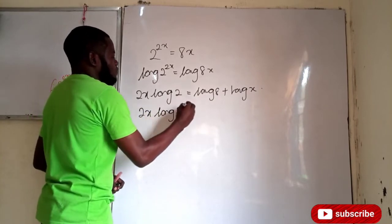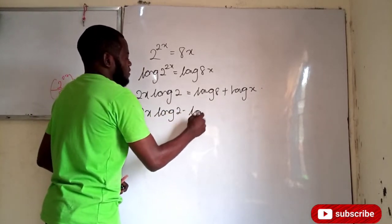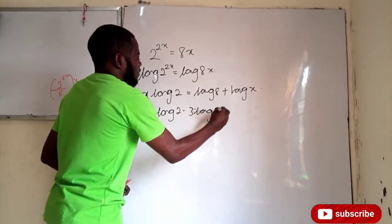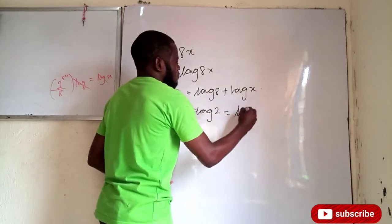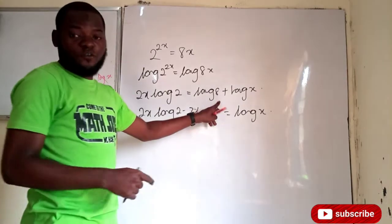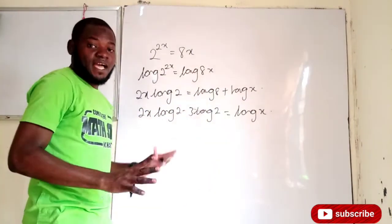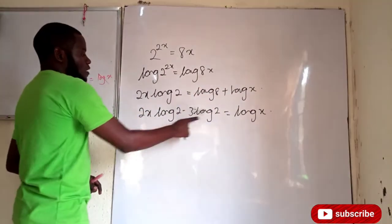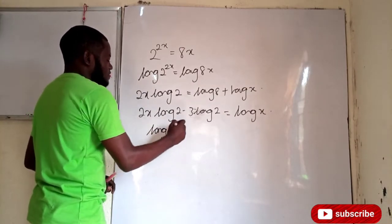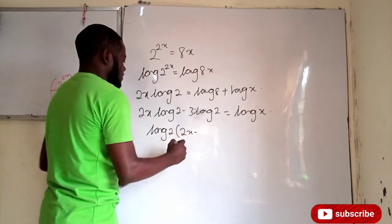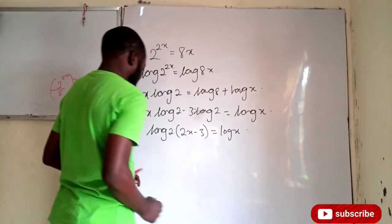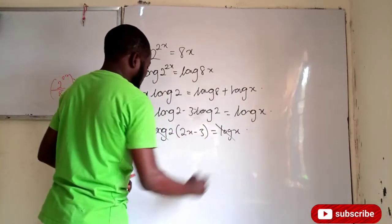If I take this onto the other side, this is 2x log 2 minus 3 log 2 equals log of x — since 8 is the same thing as 2 to the power of 3, so the 3 comes down. Log of 2 is common; if I factorize it out, I will have log 2 times (2x minus 3) equals log of x.